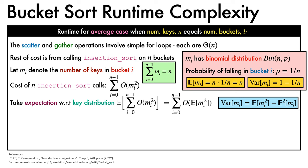At this point, we recall that we can write the variance of m_i as the expectation of m_i squared minus the squared expectation of m_i.